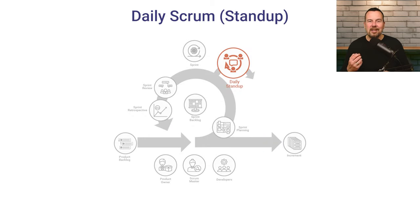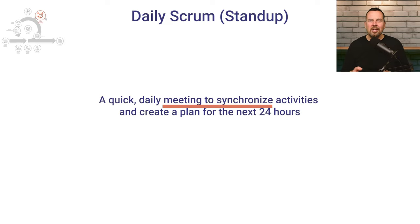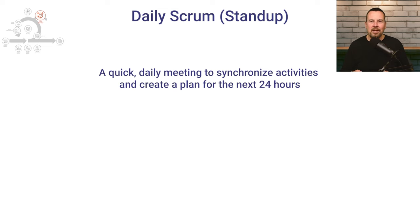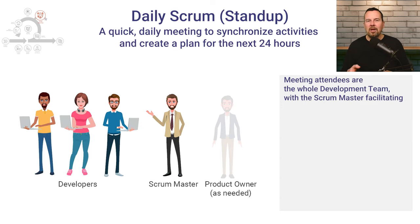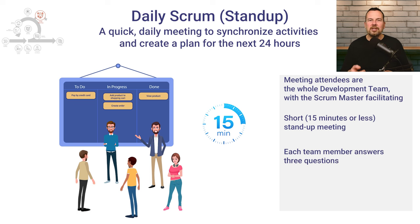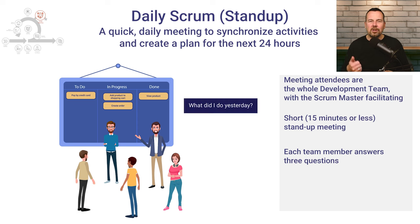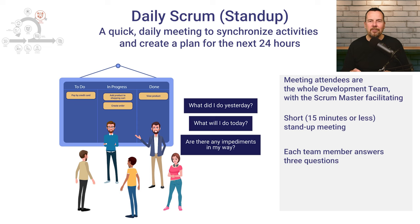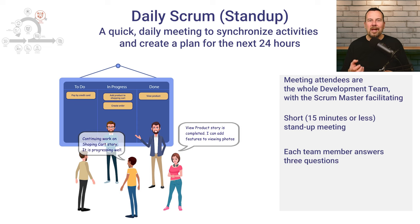The second Sprint event is the Daily Scrum, also known as the Daily Stand-Up. It is a quick daily meeting to synchronize activities and create a plan for the next 24 hours. Meeting attendees are the development team, with the Scrum Master facilitating and the Product Owner attending as needed. It is a short, 15-minute stand-up meeting where each team member answers three questions: what did I do yesterday, what will I do today, and are there any impediments in my way?